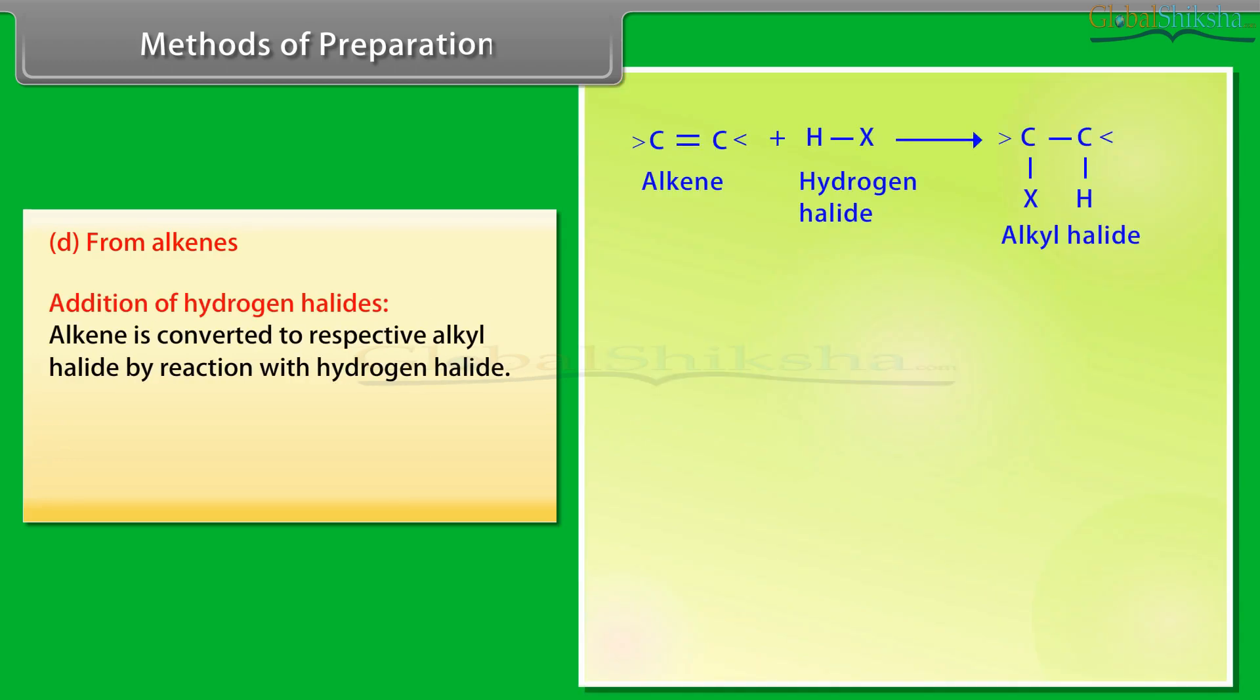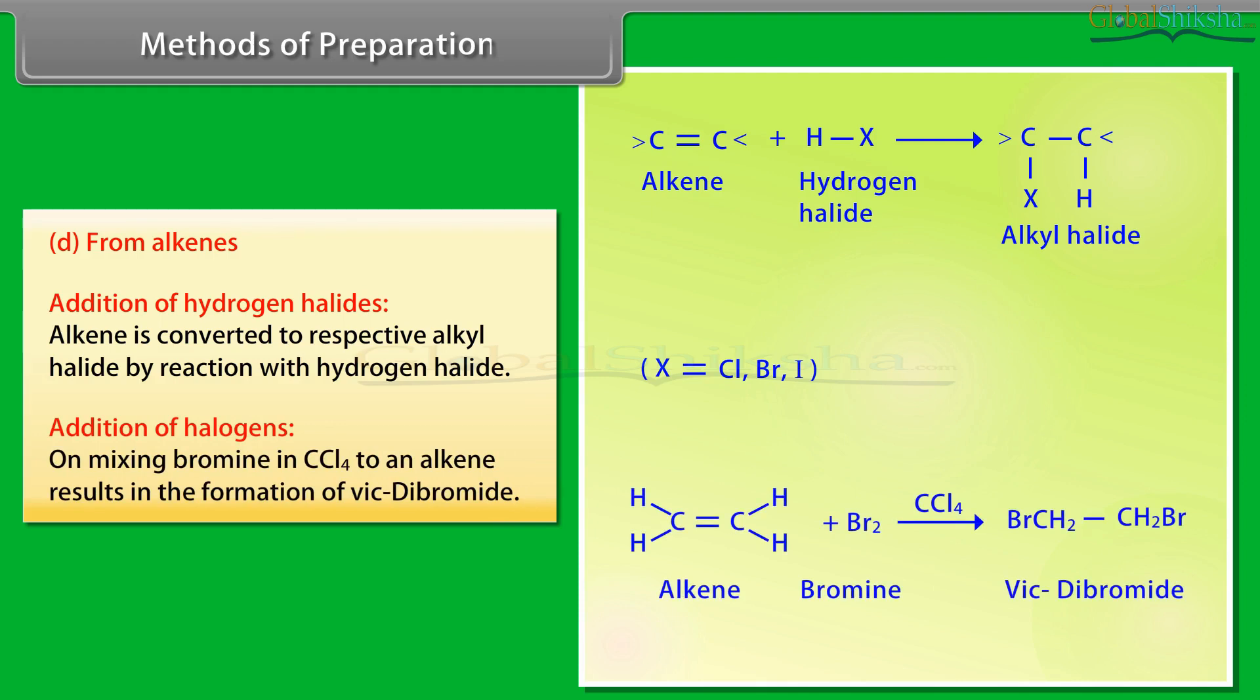From Alkenes: Addition of Hydrogen Halides - Alkene is converted to respective alkyl halides by reaction with hydrogen halide. Addition of Halogens - On mixing bromine in CCl4 to an alkene, it results in the formation of vic-dibromide.